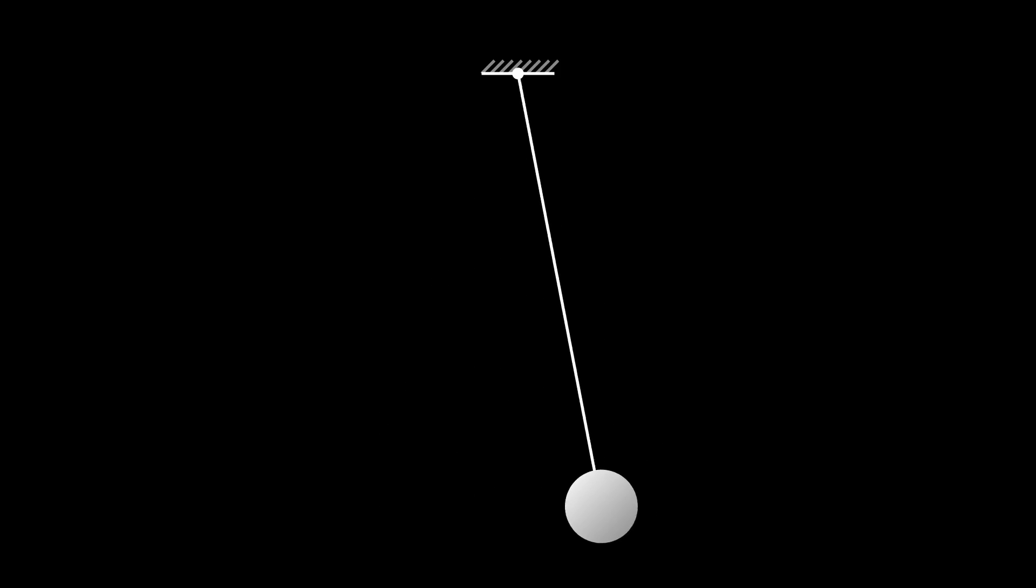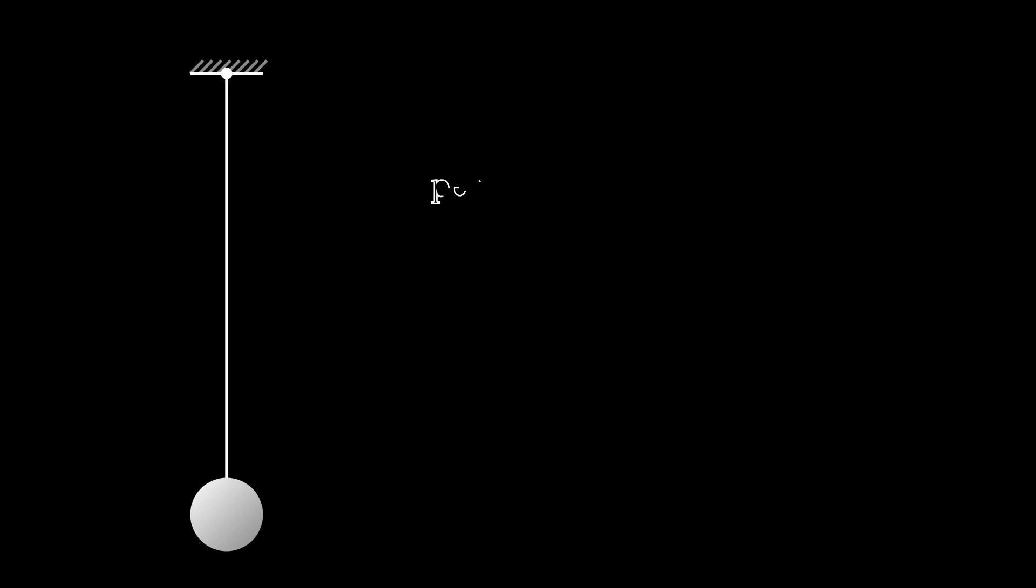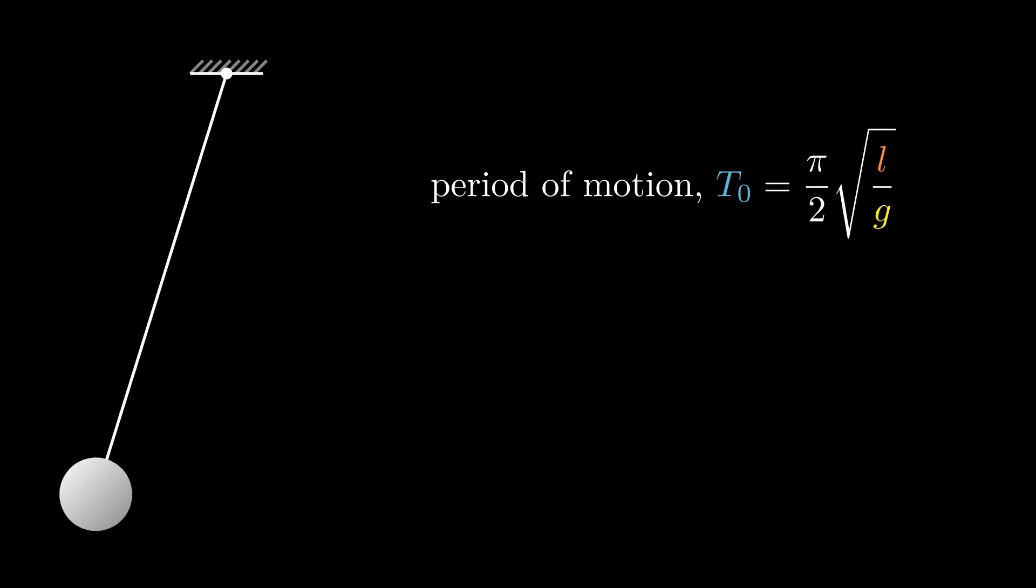Galileo observed that the simple pendulum is also isochronous. The time period of oscillation is independent of the initial angle of the pendulum. The period that we have here is the time taken for the pendulum to reach its lowest point from the starting point, or the other way around.